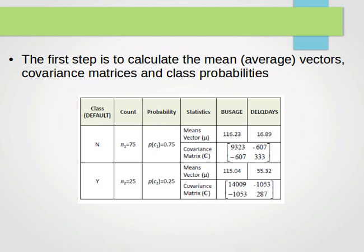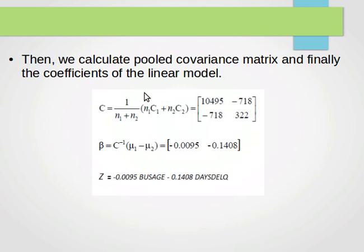After extracting these statistics, we calculate the pooled covariance matrix according to this equation. The pooled covariance matrix is 1 over n1 plus n2. n1 and n2 are the counts. C1 and C2 are the covariance matrices for the first class and second class respectively. We plug the values in and end up with this two by two matrix for the pooled covariance.